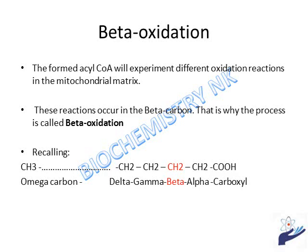Once the activated fatty acid in the form of acyl-CoA arrives at the mitochondrial matrix, it undergoes several cycles of beta-oxidation. It is named beta-oxidation because it occurs on the beta-carbon. Recalling the structure of a fatty acid: the carboxyl group is on the right; the first carbon next to it is the alpha-carbon, then the beta, the gamma, the delta, and the most distant carbon from the carboxyl is called the omega-carbon.